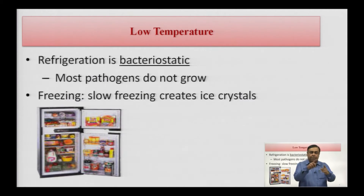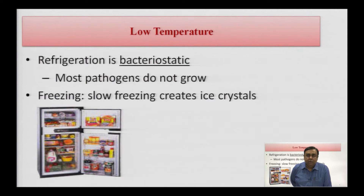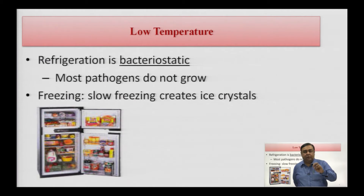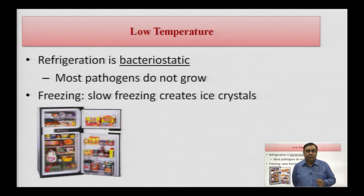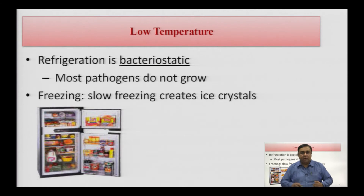Till now we have discussed heat — both moist heat and dry heat. Next, let us see how reduction of temperature can control microbial growth. In every household there is a refrigerator, where you preserve food to prevent bacteria from spoiling it. When temperature goes down, every microbe's enzymes — which have an optimum temperature for growth and multiplication — become inactive. The moment you lower the temperature, multiplication and growth stop automatically.